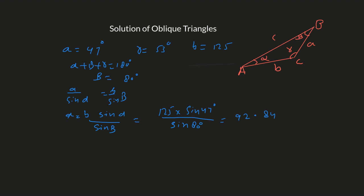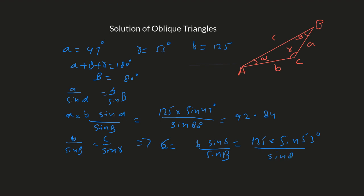Again, use the law of sines: b over sine beta equals c over sine gamma. We need to find the value of c. So c equals b times sine gamma over sine beta. Plugging in the values: b is 125, times sine of 53 degrees, over sine of 80 degrees. Using your calculator, the answer is 101.37. Hope you found this helpful.